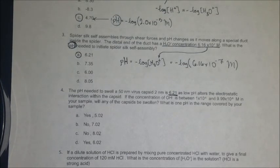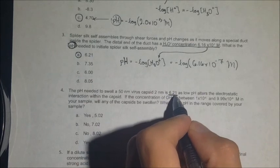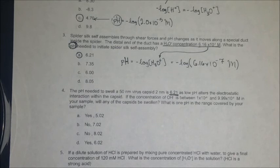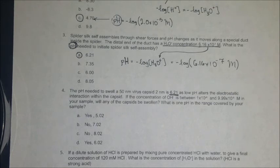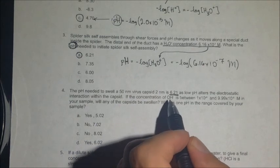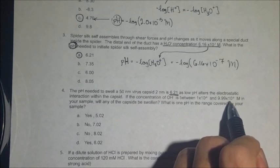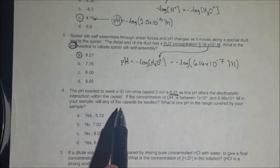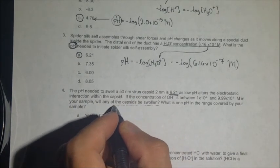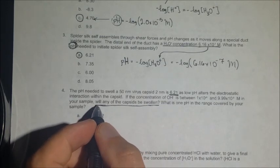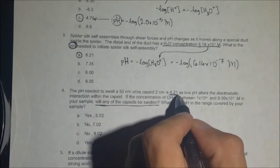Number 4 involves a virus capsid with a diameter of 50 nanometers. When dunked into an acidic solution at pH 6.21, the virus swells by about 2 nanometers to a diameter of 52 nanometers, due to interactions between the proteins holding the capsid together. The question asks: if the concentration of hydroxide is between 1 times 10 to the negative 6th and 9.99 times 10 to the negative 6th molar, will any of the capsids be swollen? Capsid swelling requires reaching a pH of 6.21.